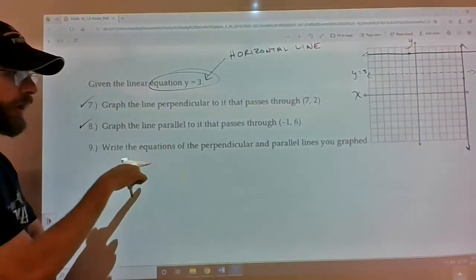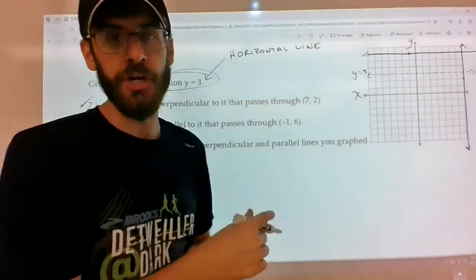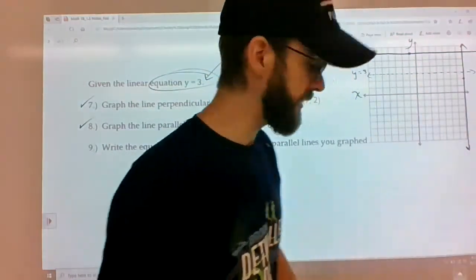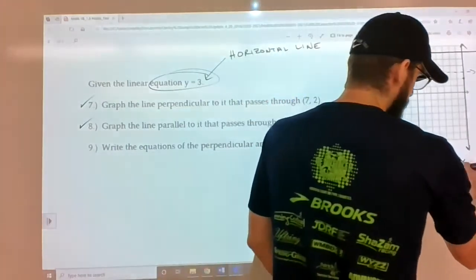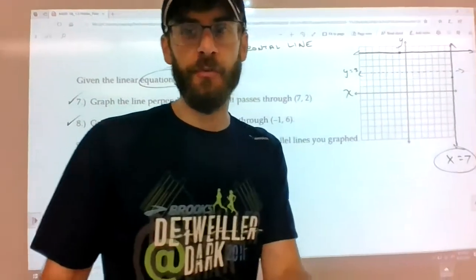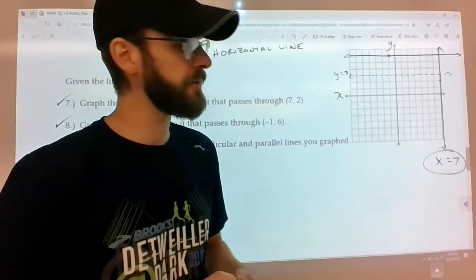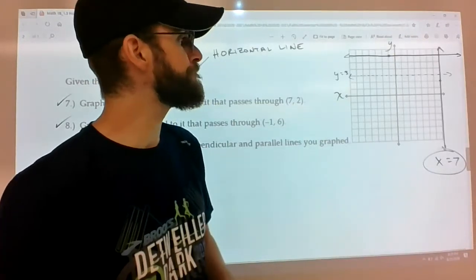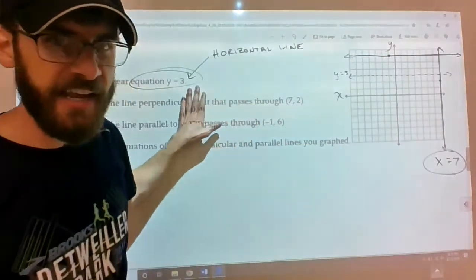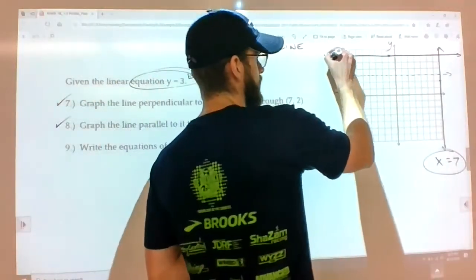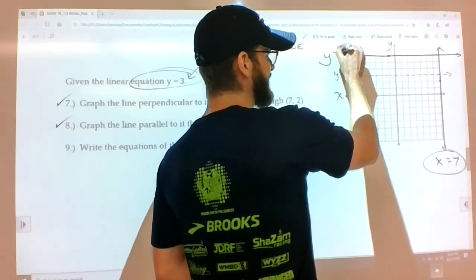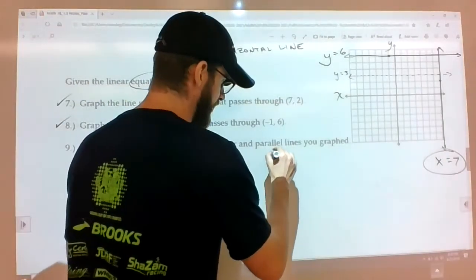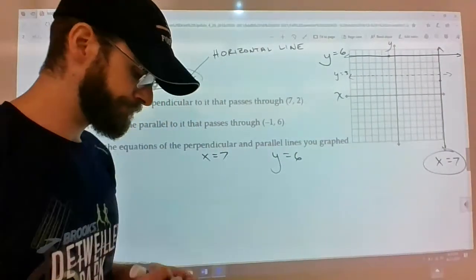Alright. Write the equations of the perpendicular and parallel lines you just graphed. Yeah. So what's the equation for this? It's a vertical line at 7 units right of the origin. So that would just be x equals 7. Remember, we had special cases for writing the equations of lines that were special cases. We had equations for special cases that don't look like y equals mx plus b. This one will kind of have the same structure. It's going to be y equals a number. But it's going to be y equals 6 units. Yeah. So those are the equations of the perpendicular line and the parallel lines that you just graphed. Easy peasy.